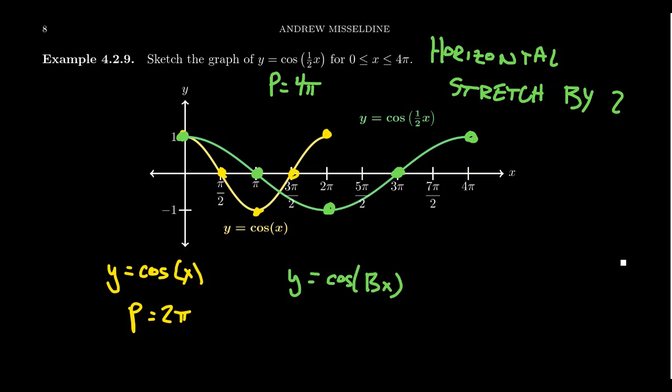But then when you switch the function to like y equals cosine of some value in here, bx, like so, how does that affect things? It turns out that in this situation, your new period is going to be 2π divided by this number b, like so. So in our example, we get 2π over 1/2, that simplifies to be 4π.